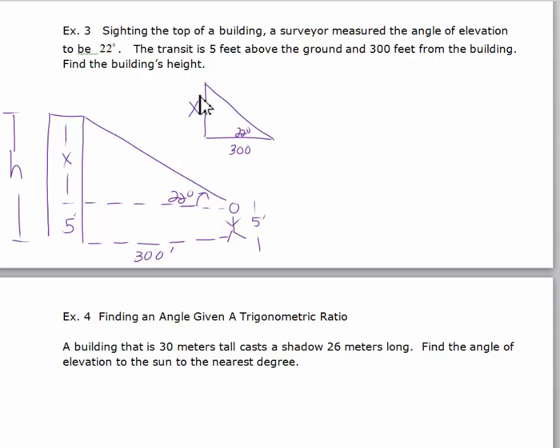I need to find x. This is a right triangle. I need to set up a relationship between the x, the 22 degrees, and the 300. With respect to 22 degrees, the x is opposite and the 300 is adjacent. So I know that tangent, because of TOA, tangent of 22 degrees is going to equal x over 300.